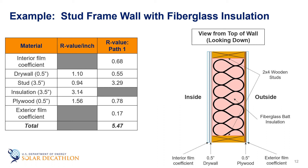For Path 1, starting with the interior film coefficient, just like the previous episode, we have R equals 0.68. Next is the drywall which has an R value of 1.10 per inch, so half-inch drywall is 0.55. The 2x4 stud is 3.5 inches in the direction of heat transfer, so at 0.94 per inch the R value is 3.29. The half-inch plywood has an R value of 1.56 per inch resulting in an R value of 0.78. And finally, the exterior film coefficient is 0.17. Adding these R values yields a total R value for Path 1 of 5.47.